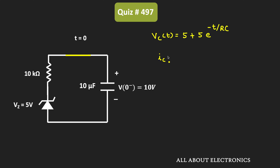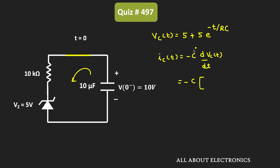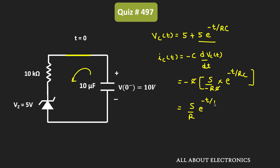We know that the capacitor current Ic can be given as C times dV divided by dt. Since the capacitor is discharging, we will have a negative sign, which indicates the rate of change of voltage is negative. The capacitor current equals minus C times the differentiation of the above expression. The differentiation of the constant 5 is 0, and differentiating the exponential term gives 5 divided by minus RC times e to the power minus T divided by RC. The C cancels out, giving us 5 divided by R times e to the power minus T divided by RC.